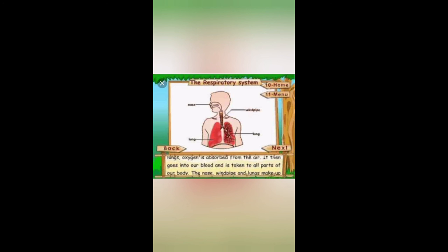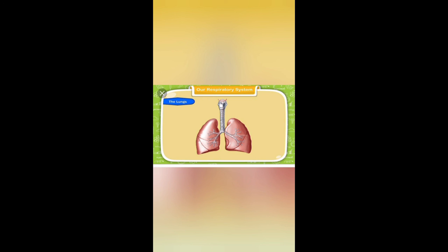When we breathe in, air enters the body through the nose, then it goes into the windpipe and finally enters the lungs. The lungs expand in size when air enters them, that's why our chest expands. In order to keep our lungs healthy we must not breathe in polluted air, instead we must breathe in fresh air.